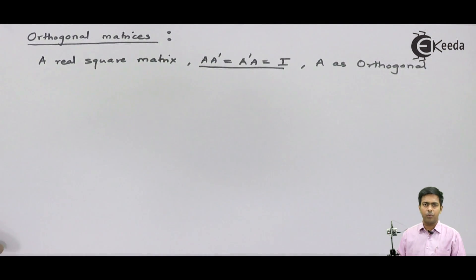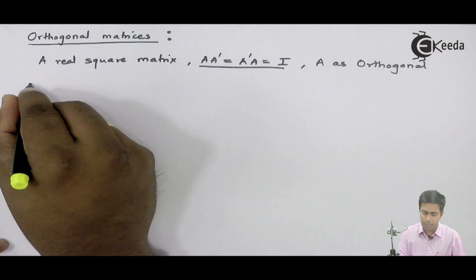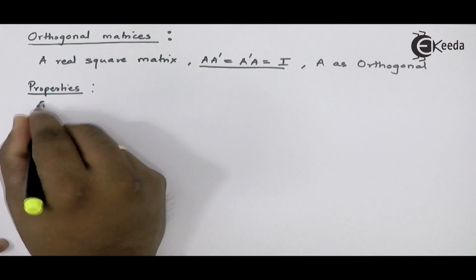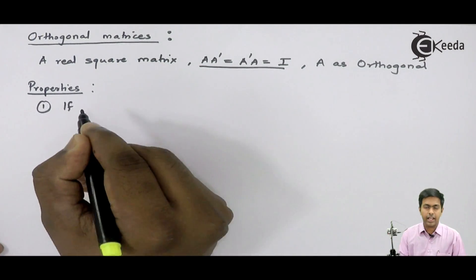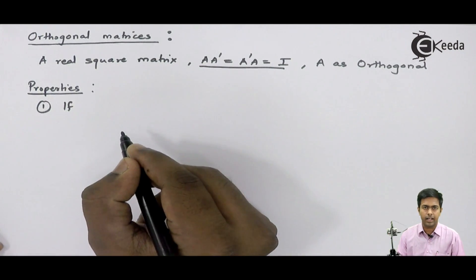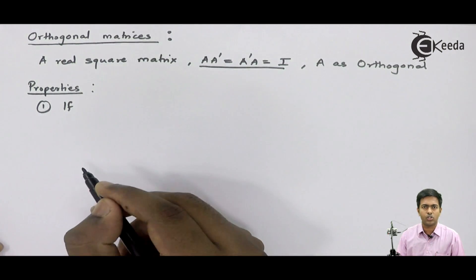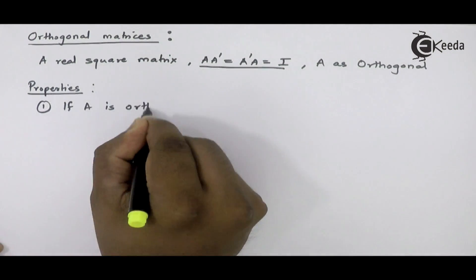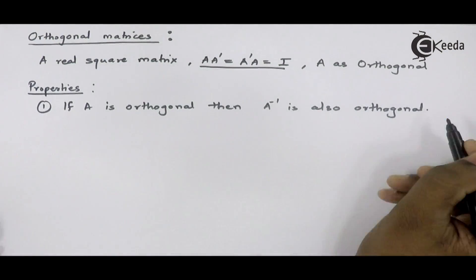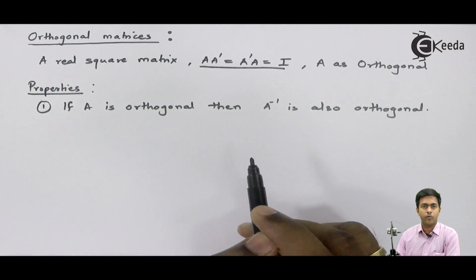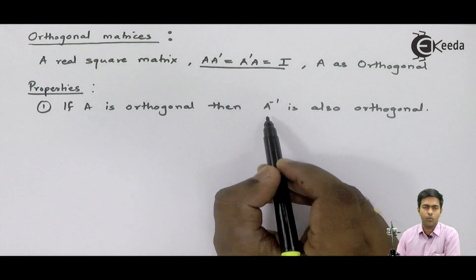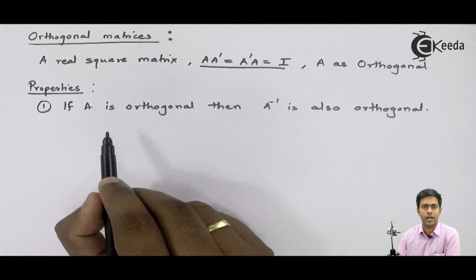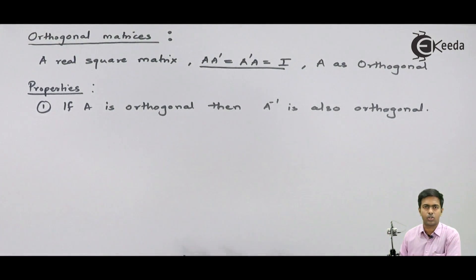Now, before moving further, let's see some properties of orthogonal matrices. The property number one: If A is orthogonal matrix, then A inverse is also orthogonal. From this property, it is very clear that the inverse of orthogonal matrix is also orthogonal.